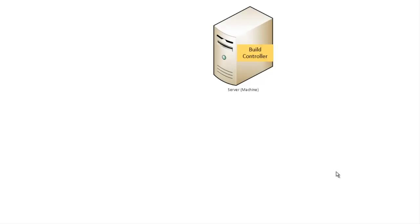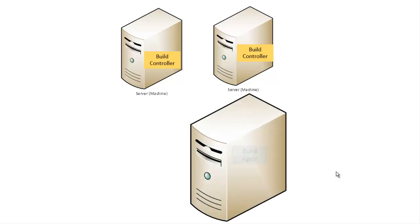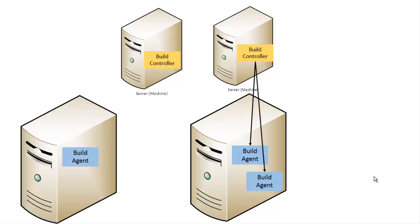If we have a machine that has a Build Controller and another machine that also has a Build Controller, we can't install two controllers on the same machine. We can have a separate machine with a Build Agent. We can install the Build Controller on the TFS application tier machine, but it is not recommended to install the agent on the application tier because the agent does the intensive work of building the application and the project.